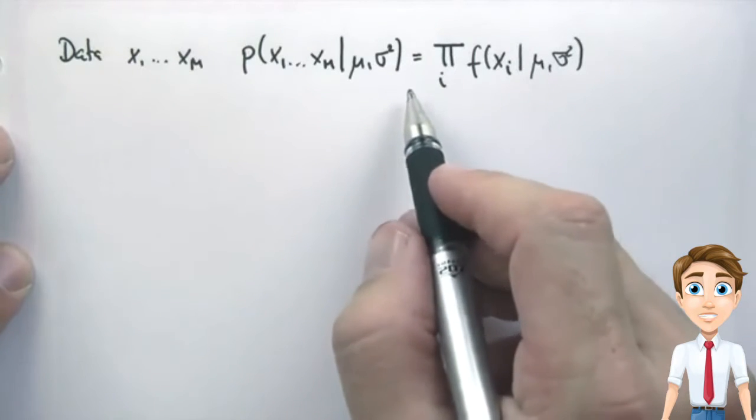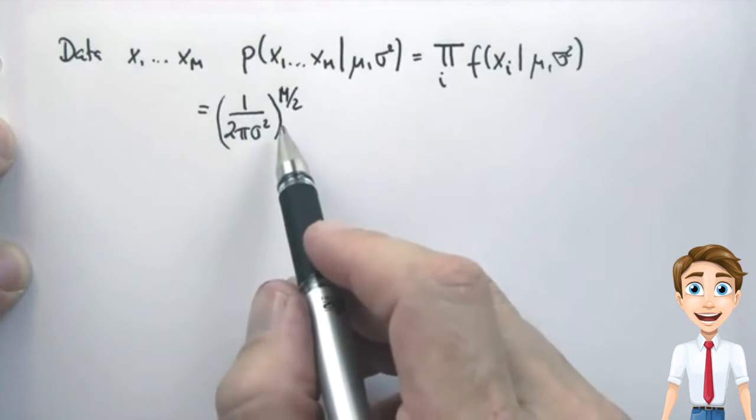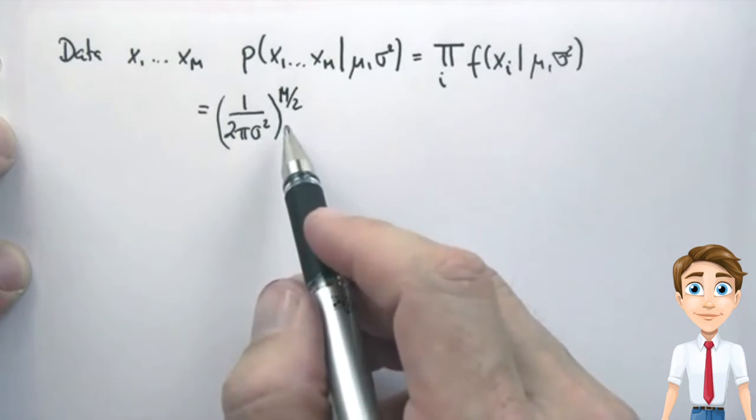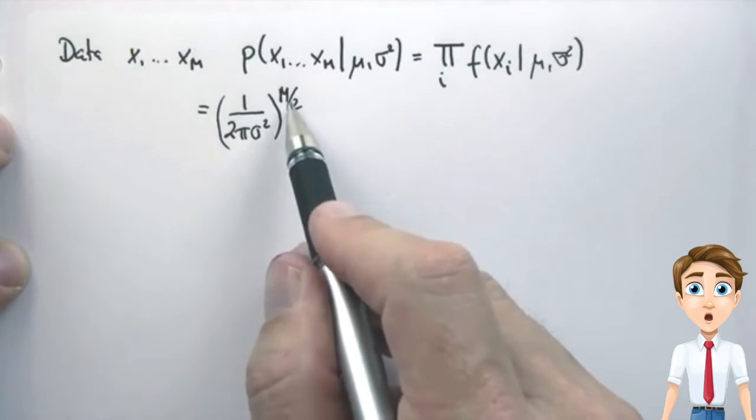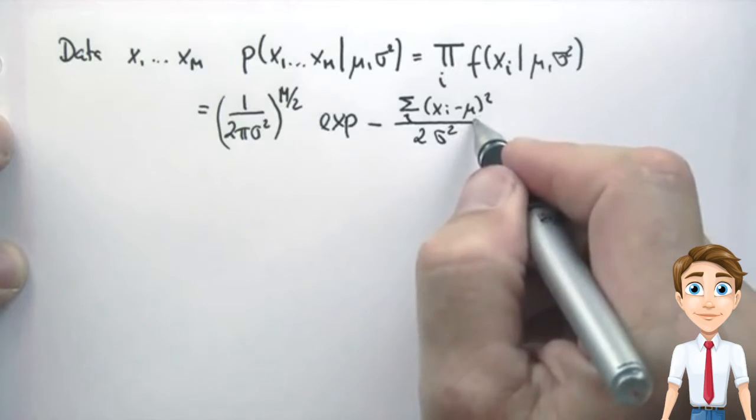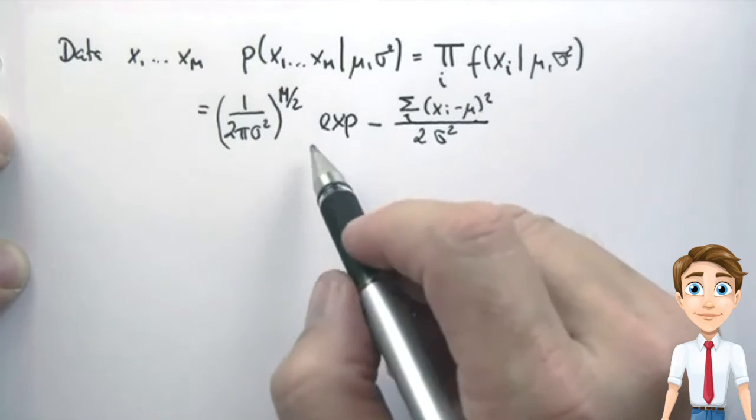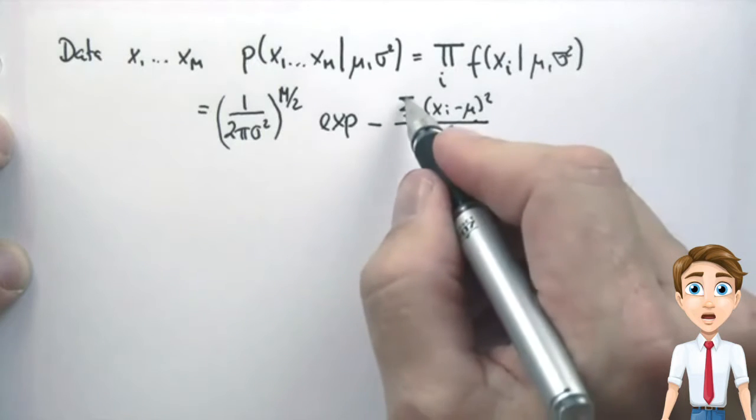And if you plug in our Gaussian formula, you get the following. This is the normalizer multiplied m times, where the square root is now drawn into the half over here. And here's our joint exponential, where we took the product of the individual exponentials and moved it up straight in here, where it becomes a sum.